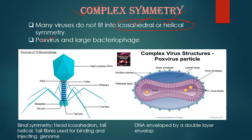You can see here this is the picture of T4 bacteriophage. T4 bacteriophage shows binal symmetry. It means the head portion is icosahedral, and the tail portion is helical — similar to TMV. This type of symmetry is known as binal symmetry.